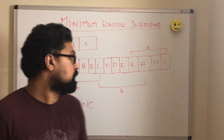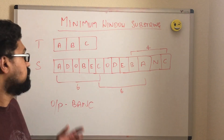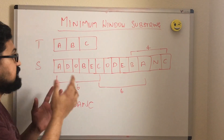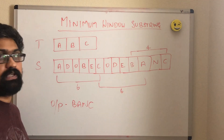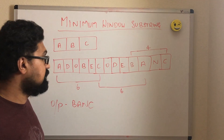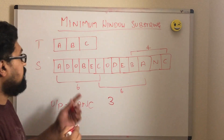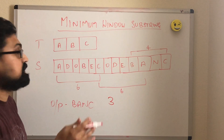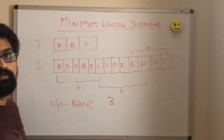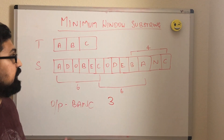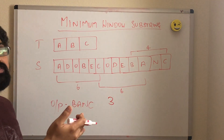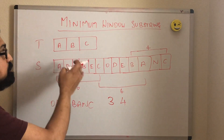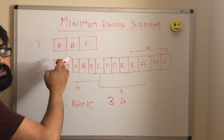So how can we solve this problem? If you think of the brute force approach, we can find all substrings in s with minimum length equal to t, and then see if those substrings have all of the characters of t. So we can start off with length equal to 3. Find all substrings in s with length equal to 3 and see if any of those substrings has all characters of t. If we don't find any, then we can increase the substring length to 4 and see if we can find a substring of length 4 with all characters of t.